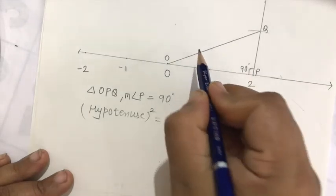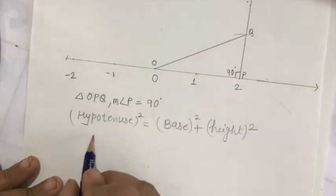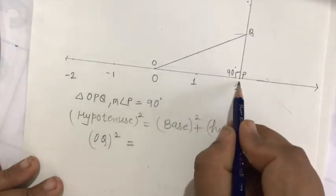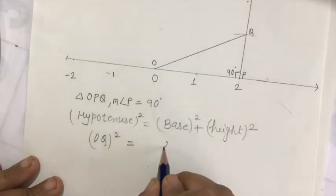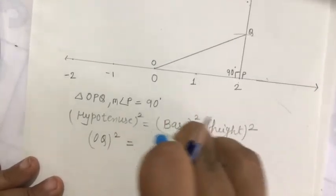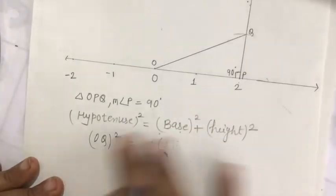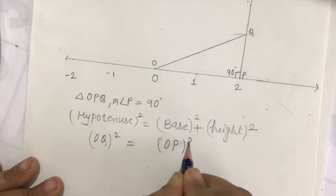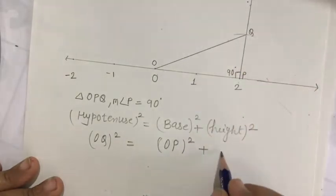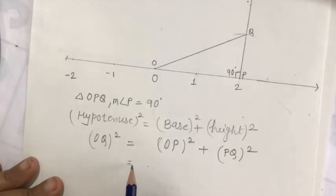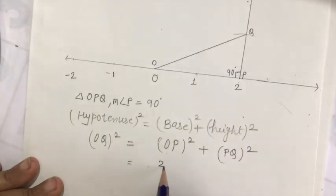You know that by using the Pythagoras theorem, hypotenuse squared equals base squared plus height squared. The side opposite to 90 degrees is OQ, that is the hypotenuse. So OQ squared equals — the base is O to 2, so that is OP squared, and the height is PQ, so PQ squared. Note: we should write OP square first. OP distance O to P is 2, so 2 squared.